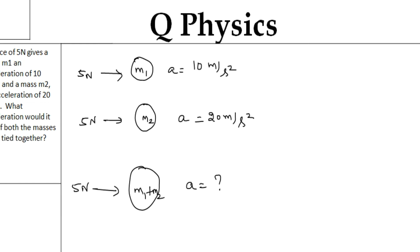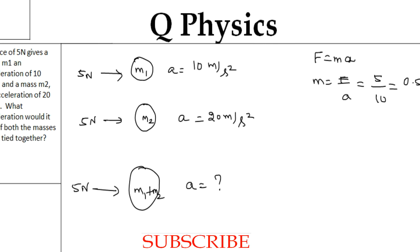To solve this, first find the masses m1 and m2 using Newton's second law: F = mass × acceleration, so mass = F divided by A. For m1, the force is 5 newtons and the acceleration is 10 m/s², giving m1 = 5/10 = 0.5 kilograms.